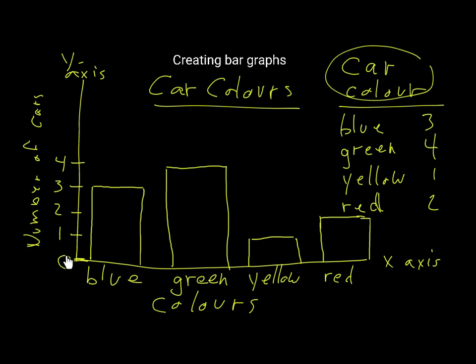The x-axis has to have a title and the y-axis also has to have a title. Now you know how to create a bar graph. The most important things to remember, besides the title and labels, are to keep the width of the bars the same and the distance between them the same. Good luck and enjoy!